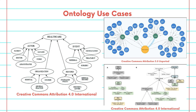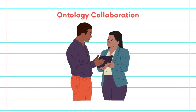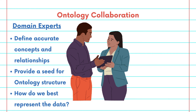For instance, a healthcare ontology can streamline patient data management while a technology ontology can enhance software interoperability. Collaboration is key in ontology design. Domain experts provide the necessary knowledge to define accurate concepts and relationships and often provide a seed for the knowledge graph or ontology structure.